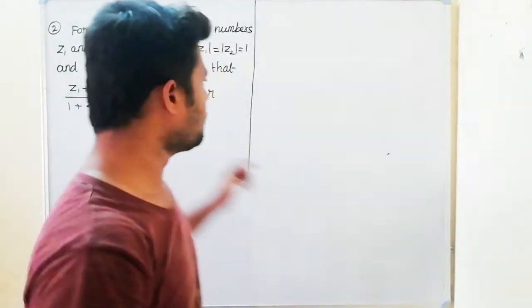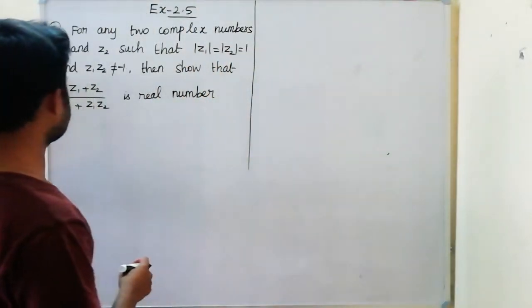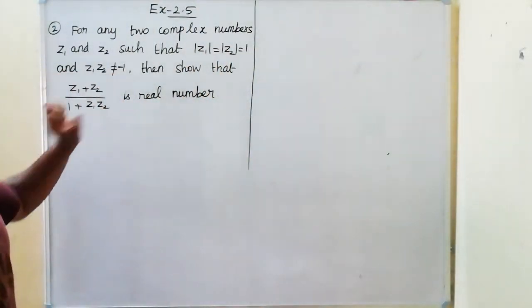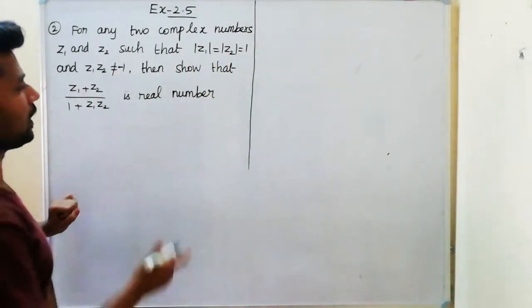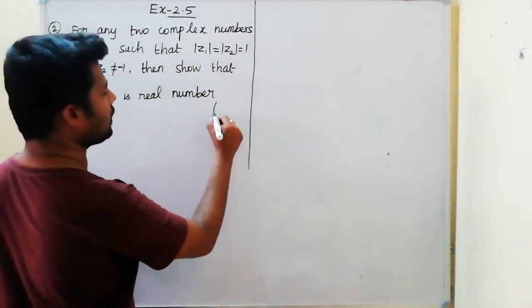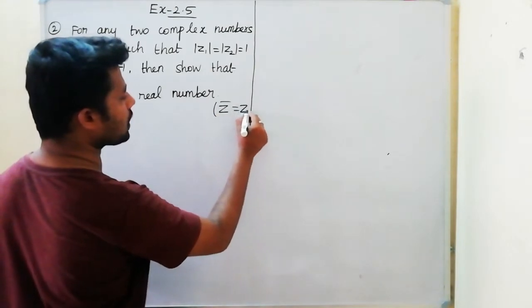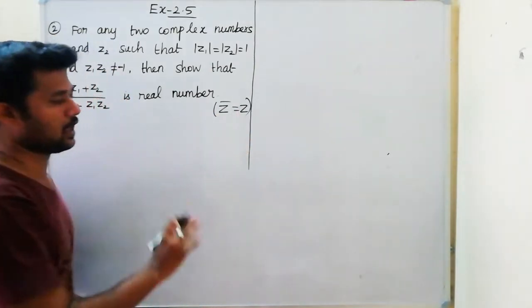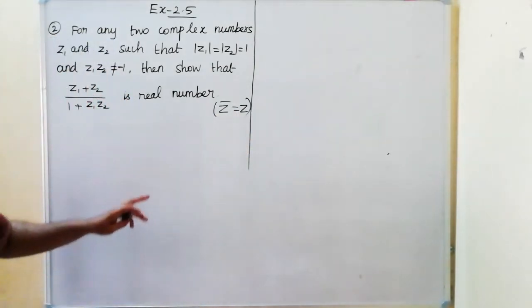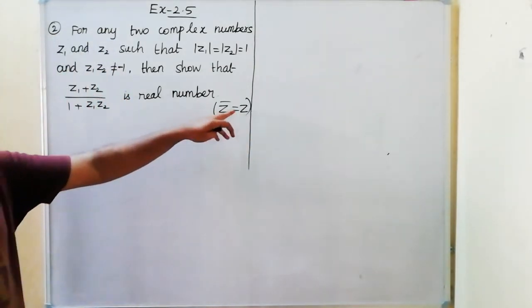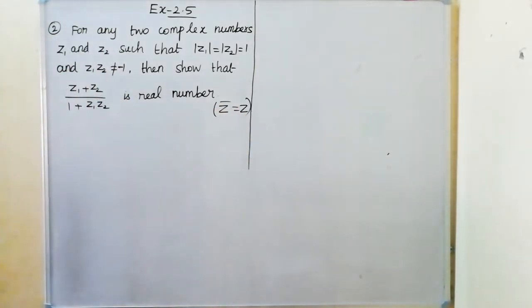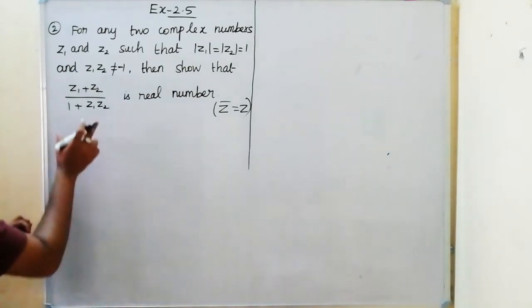In the condition, we put in terms of real. For a number to be real, the condition is z̄ equals z. So the real condition is z̄ equals z.